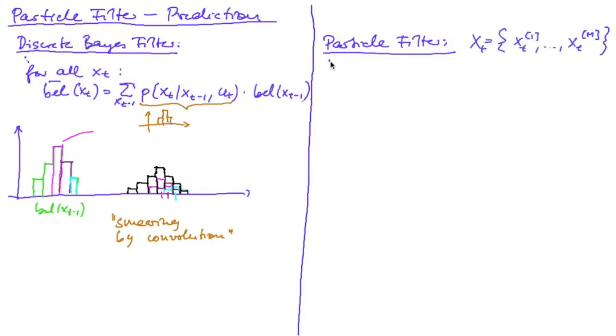And now in the particle filter, our distribution is represented by the set of particles. And the update step looks pretty similar.